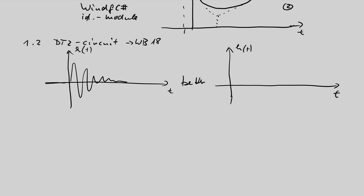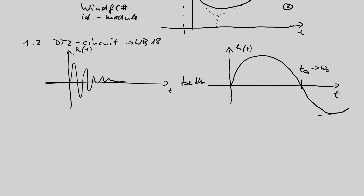Better use a much larger time scaling showing the maximum and then the first zero crossing. That value is good for omega-naught, but you also need the first minimum — that value together with U-max is used for the damping factor. So these are the key measurements for the DT2 system.